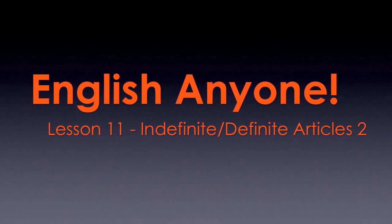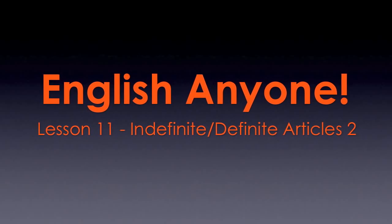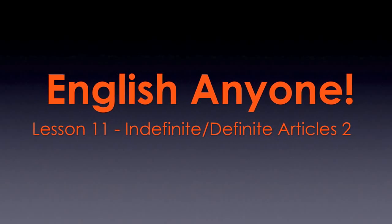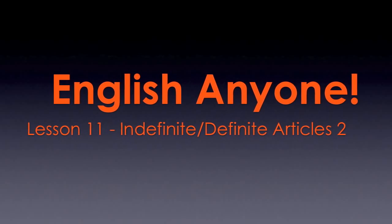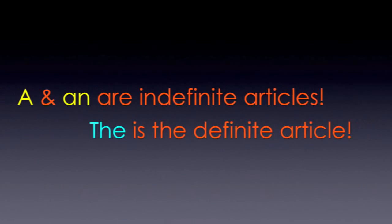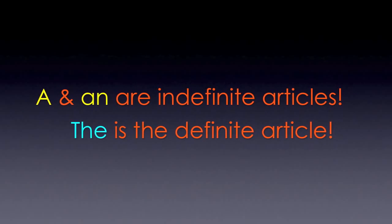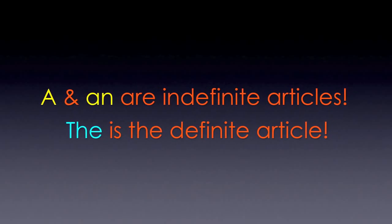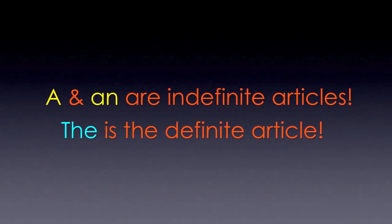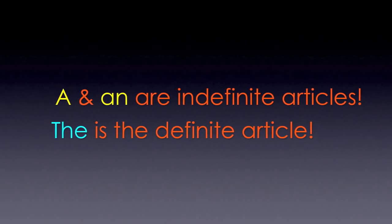English Anyone. Lesson 11: Indefinite and Definite Articles 2. A and An are indefinite articles. The is the definite article.